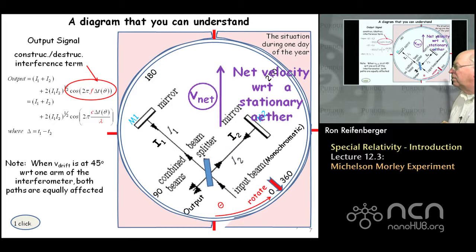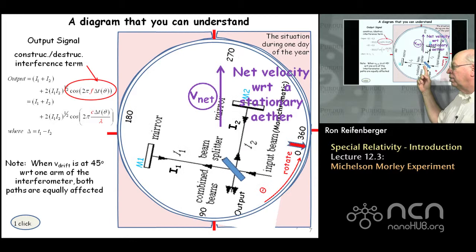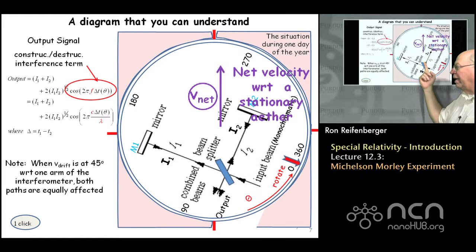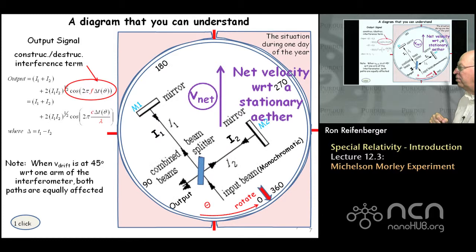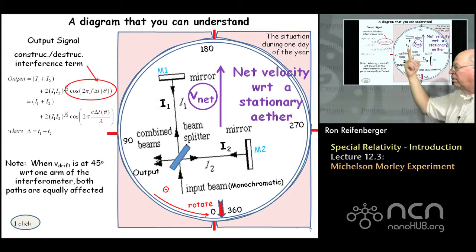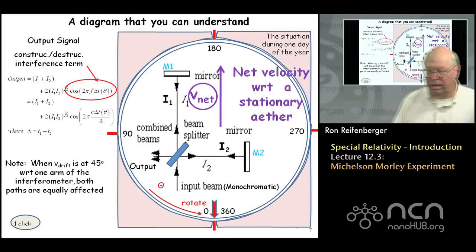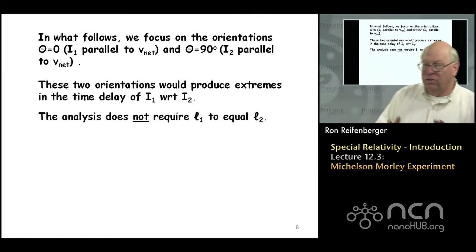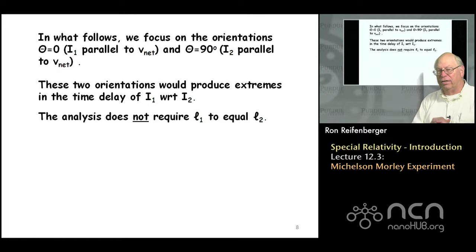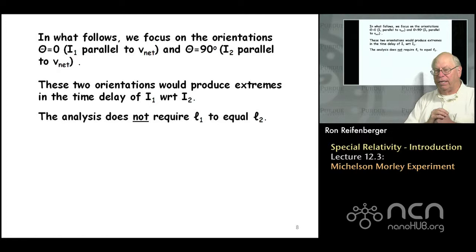There are two conditions of most interest. One is referred to as the 90 degree angle, when beam I2 is parallel to the net drift velocity of the ether. The other orientation is when the arm I1 is parallel to the net drift velocity of the ether. These two orientations produce extremes in the time delay between beams I1 and I2.